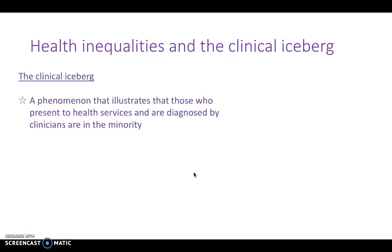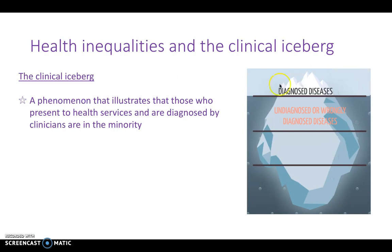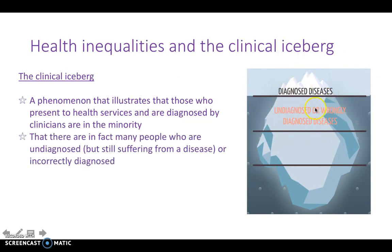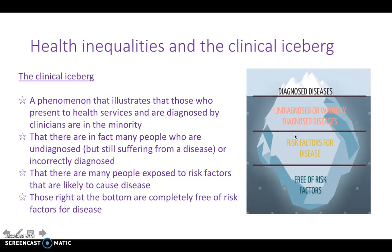Next, we have the clinical iceberg — a phenomenon that illustrates those who present to health services and those that aren't presenting. The tip of the iceberg represents diagnosed diseases — those that have presented to health services and have been diagnosed. Next, you have those that are undiagnosed or incorrectly diagnosed but are still suffering from disease, representing the unmet need. Then you have risk factors for disease — those exposed to risk factors likely to cause disease but not yet suffering. And at the bottom, you have those who are free from risk factors and are actually healthy individuals.